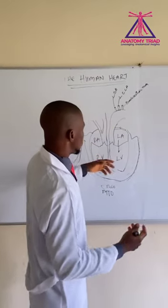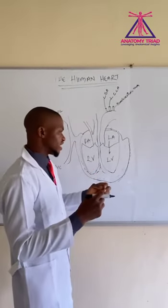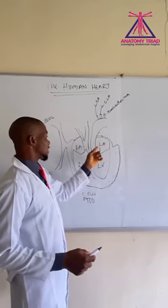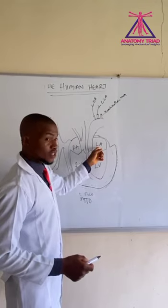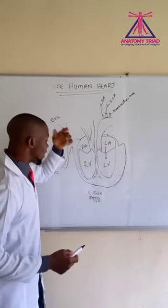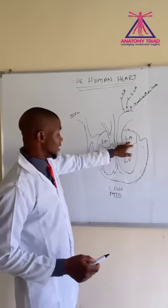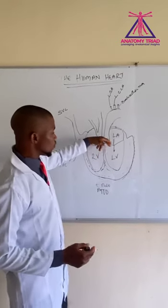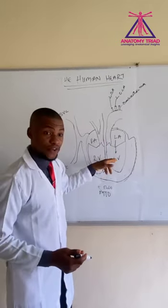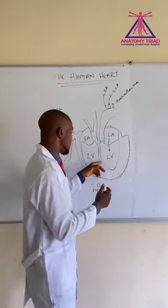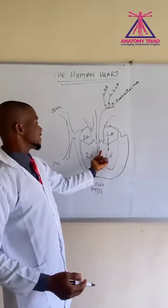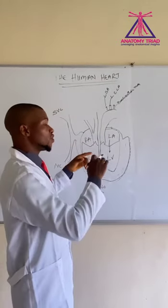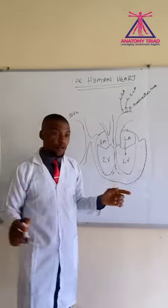Having entered the lungs, the blood is now rich in oxygen. Then from there, the blood will now enter into the left atrium. Having entered the left atrium, the blood will now move into the left ventricle. From the left ventricle, the blood will now enter into the aorta, which will now be circulated to the whole body.